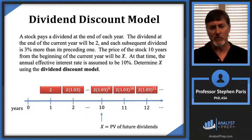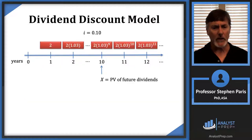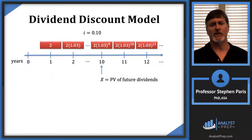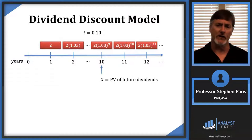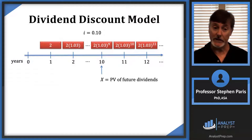So this is what my timeline is going to look like. I've got CapX as the present value of the future dividends. The dividend at time one is two, and the dividend at time two is two times 1.03, and so forth.